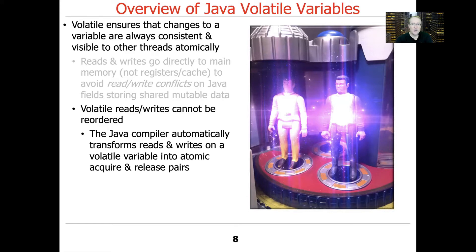Under the hood, whenever you have a volatile variable, any reads and writes to that variable are automatically updated by the compiler to atomic acquire and release pairs. These are typically done with low-level hardware instructions — the compiler generates bytecode that uses these instructions. This is all done for you, and these are basically lightweight synchronization mechanisms that are part of the instruction set of Java.